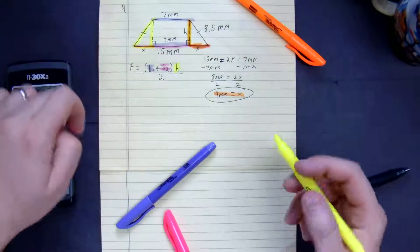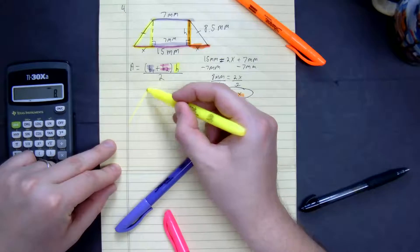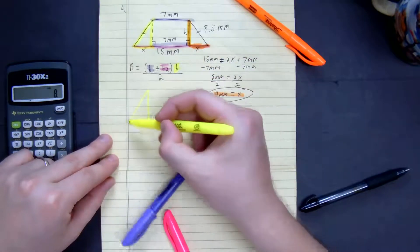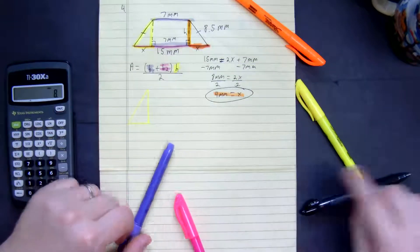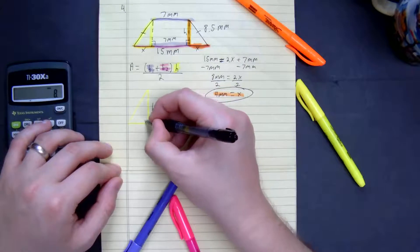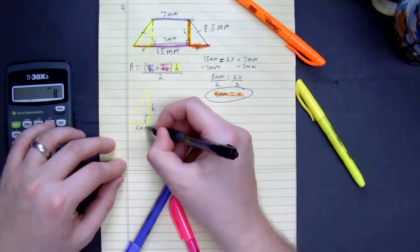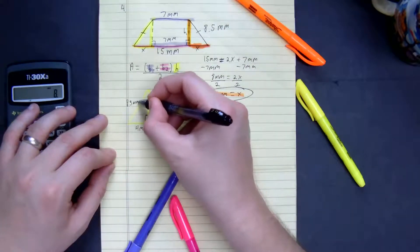But we do know what majority of this problem is. So right there, we have that, so we have h, we have 4 millimeters, then we have 8.5 millimeters.